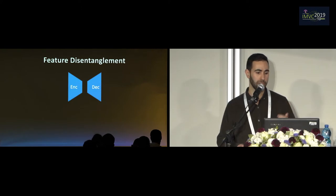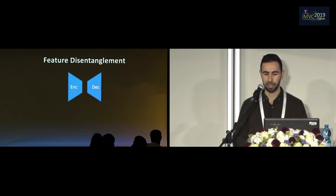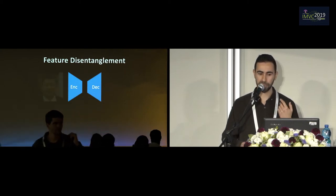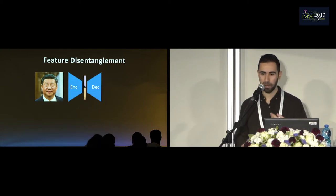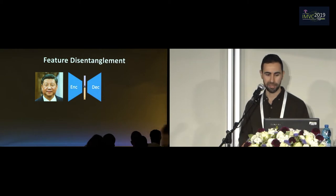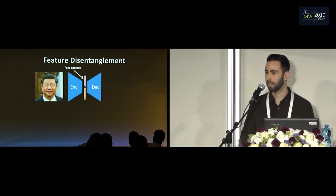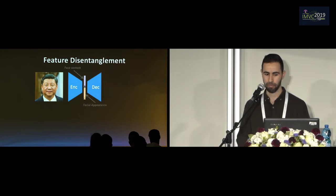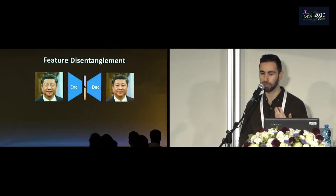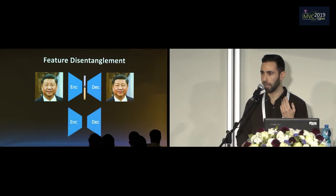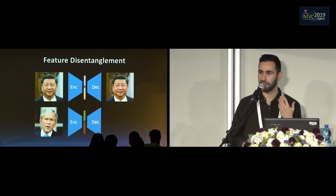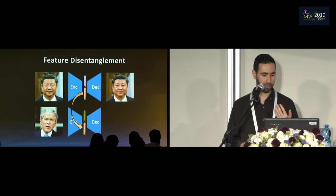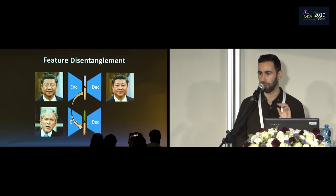Another way to do face swapping is called feature disentanglement. In this method, we first learn to encode and decode images of faces while separating the feature vector into two parts: the facial context and the facial appearance. To do the actual face swapping, we take an image of a different person, encode its feature vector, swap in the identity of our original person, and then decode it back into an image.